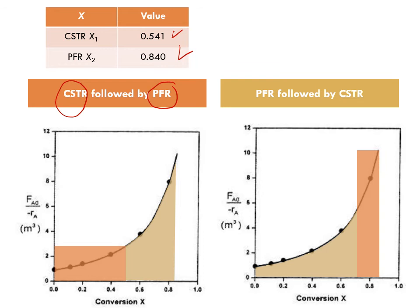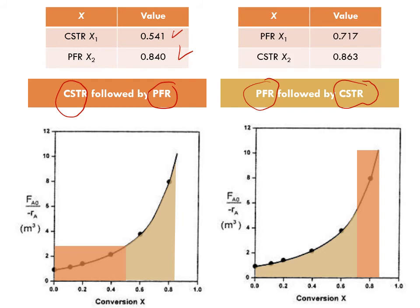Then I repeated the same procedure for plug flow reactor followed by CSTR, and the answer which I found was X_1 for plug flow reactor and X_2 for CSTR. Looking at this data, if you don't have any other concerns, only the sequencing of the reactors, which sequence are you going to choose? Obviously, you will choose the first sequence because it gives you higher overall conversion just by changing the sequence.